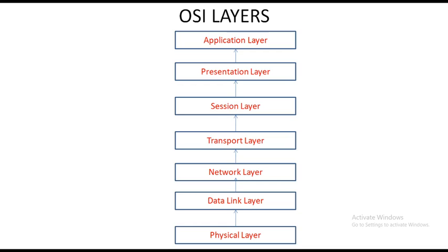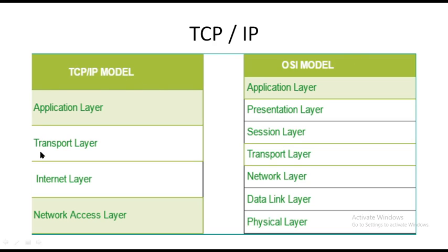Next is TCP/IP. In the TCP/IP model, the first two OSI layers — the physical layer and the data link layer — form together as a new layer called the network access layer. The network layer of OSI is known as the internet layer in TCP/IP. The transport layer remains the same. The session layer, presentation layer, and application layer form together as the application layer in TCP/IP. The OSI model has 7 layers but the TCP/IP model has only 4 layers.